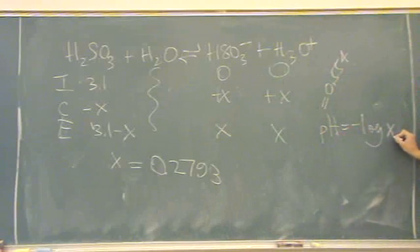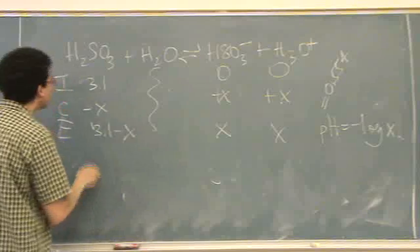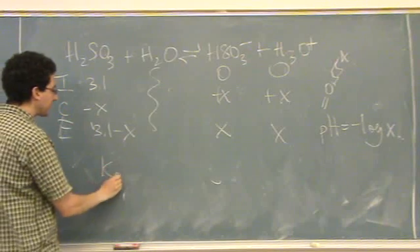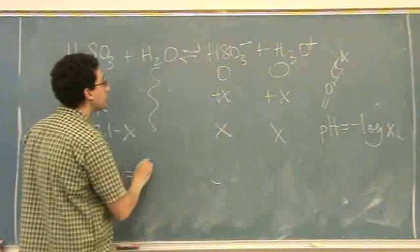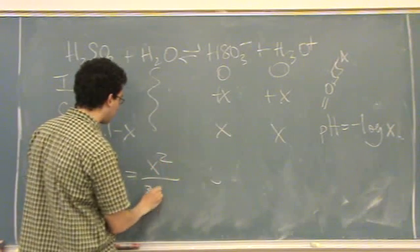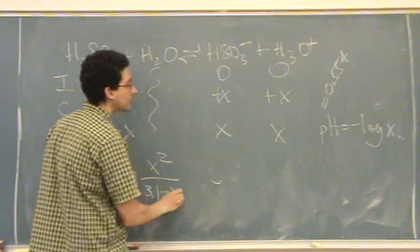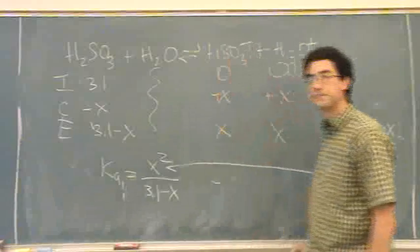So you get, you solve for X, that's how I solve for X so easily. Okay. So then, this one KA, specifically KA1, the first loss of the proton, is equal to X squared over 3.1 minus X, and then, oh okay. There we go.